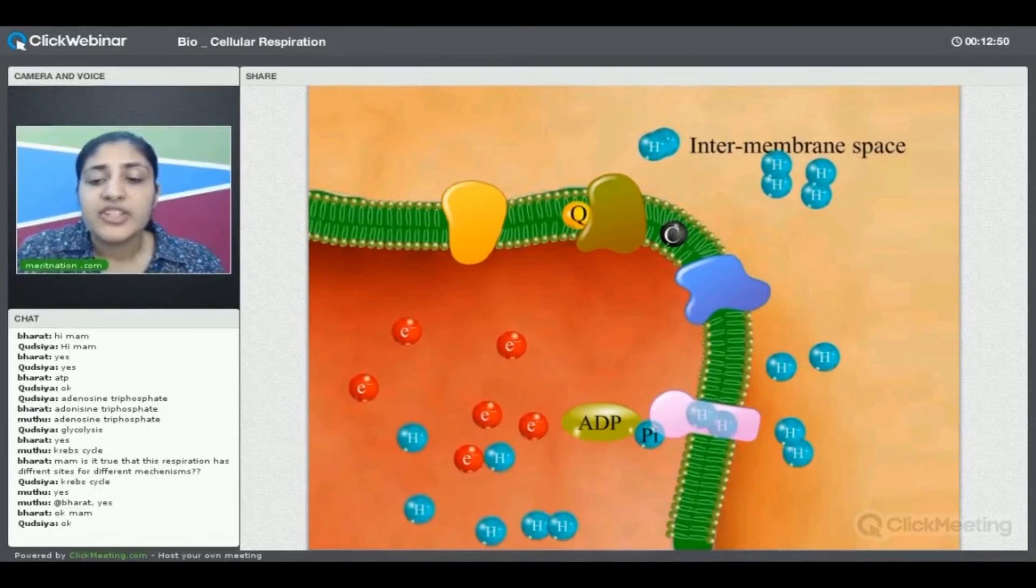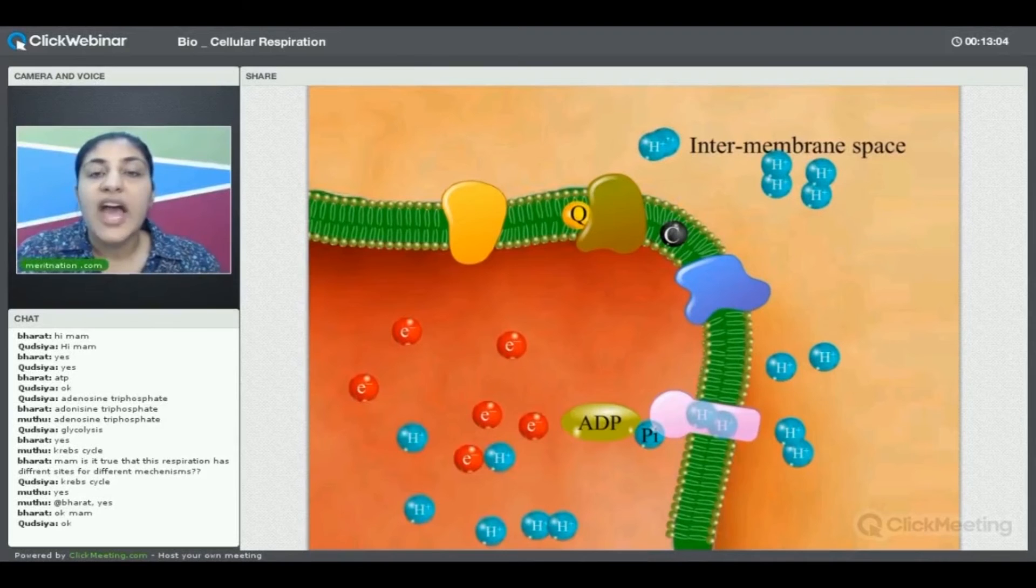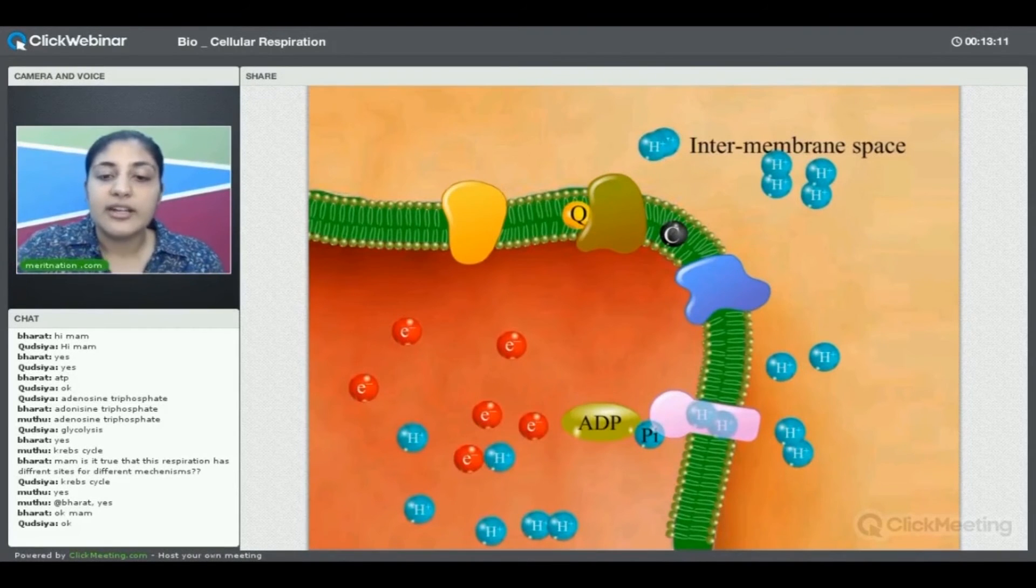This ATP synthase molecule, you can compare it with a motor. Just like in dams, we have a lot of collected water in one place, and when we open the gates, the potential energy of that collected water, when it rushes down through the turbines, it starts to move the turbines.